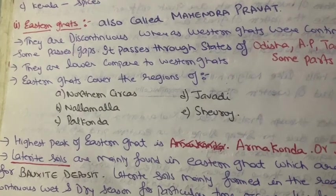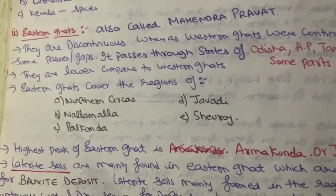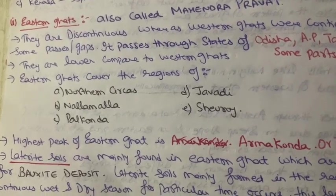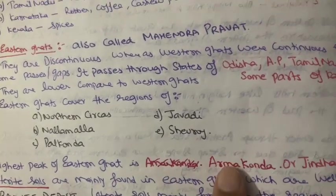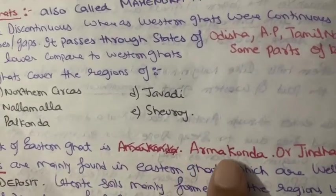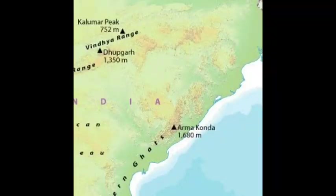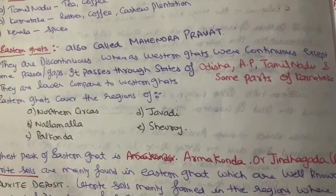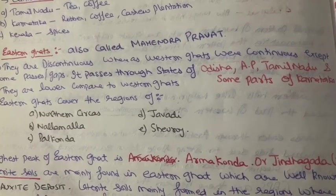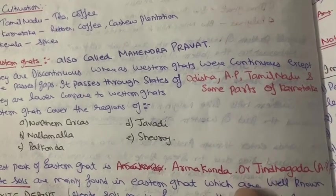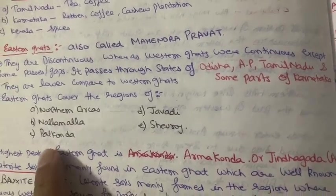Just as we learned that the highest peak of Western Ghats is Anamudi, located in Kerala, here the highest peak of Eastern Ghats is Armakonda — also called Jindhagada — which is located in Andhra Pradesh. Previously, Mahendragiri was considered the highest peak, but a recent survey confirmed that Armakonda (Jindhagada) in Andhra Pradesh is the highest peak of the Eastern Ghats.